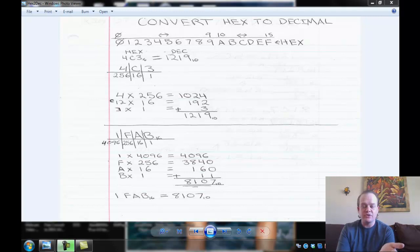Well, decimal is a weighted number system. Hexadecimal is a weighted number system. Binary is a weighted number system. What that means is we have placeholders. We have the ones place. That's the weight for the ones place. Sixteen, 256,